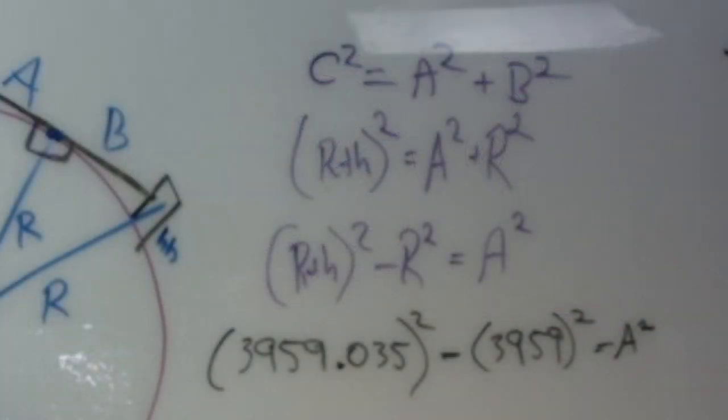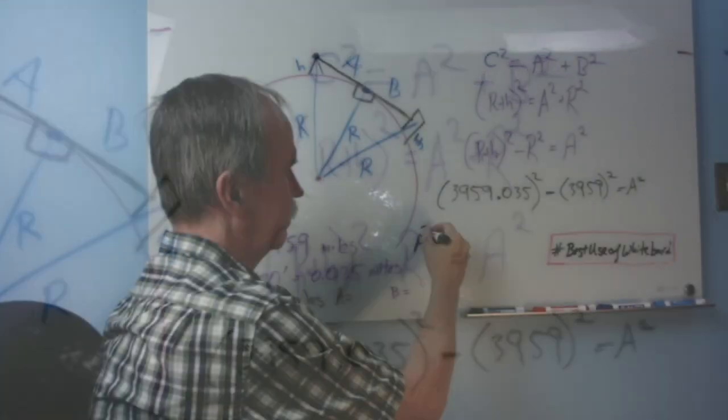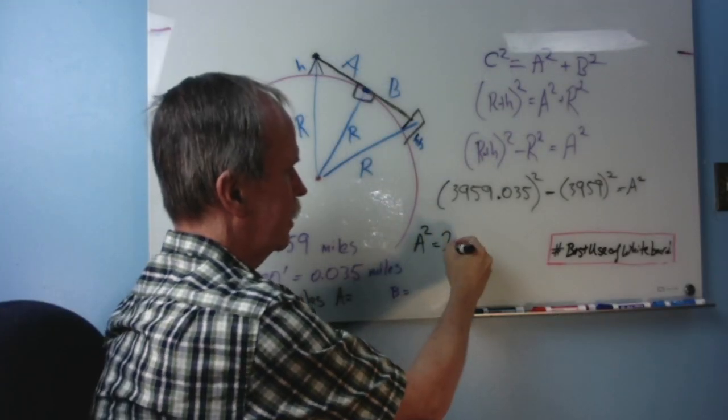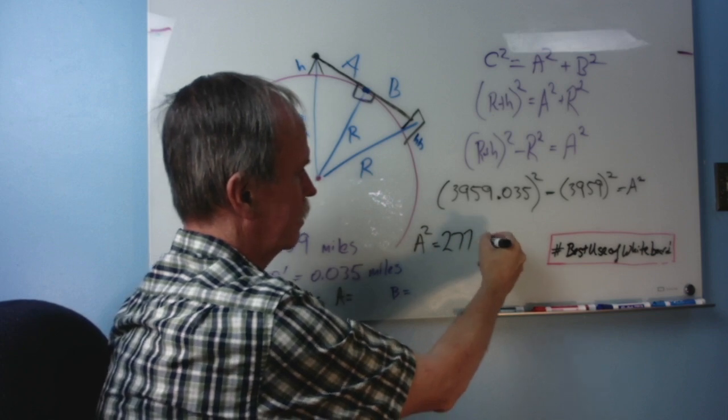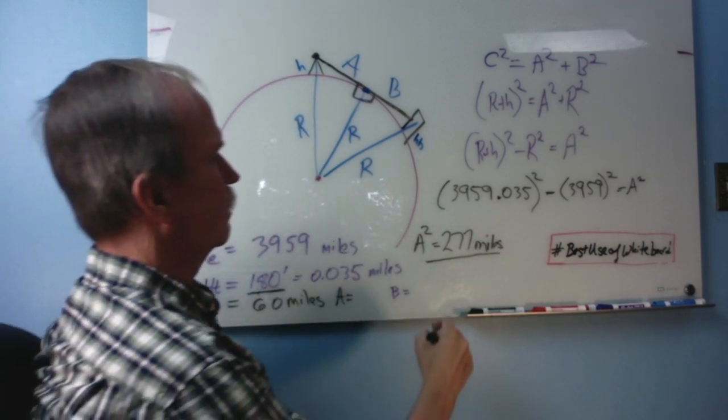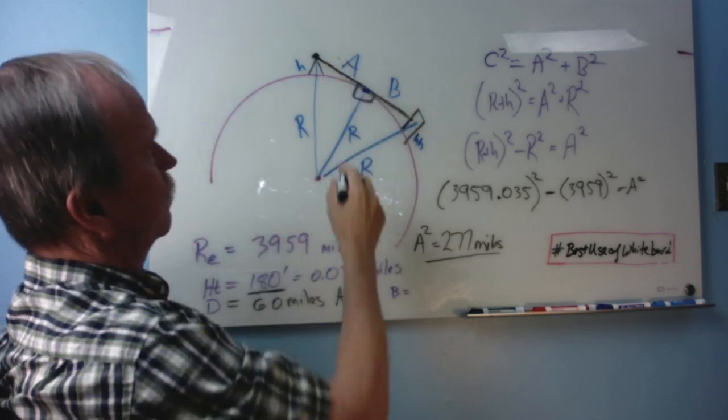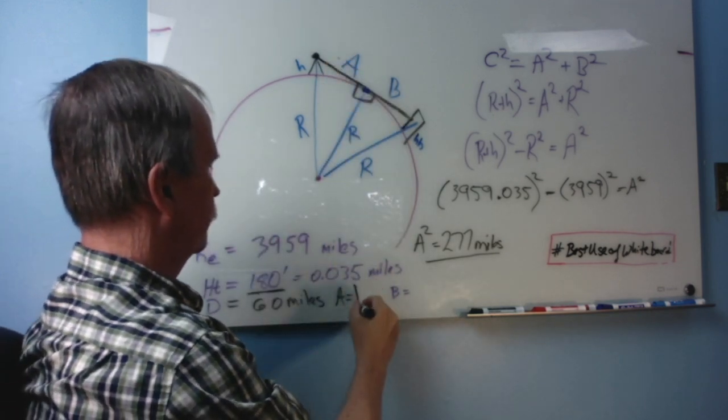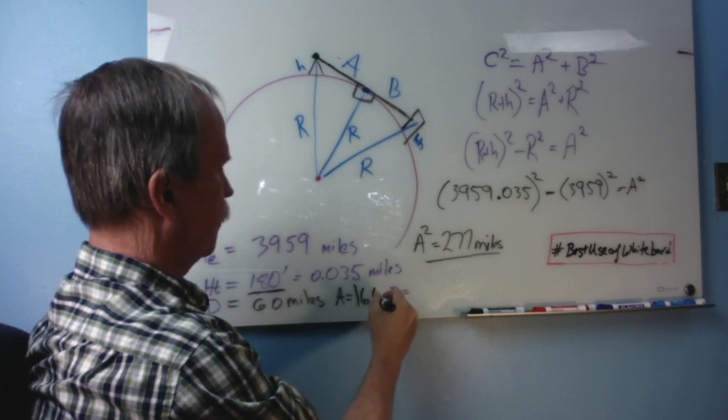With me so far? Now, you can do the math for that yourself, but we're going to come up with A squared equals 277. Now, if we take the square root of that, we're going to come up with a length of A here of 16.64 miles.